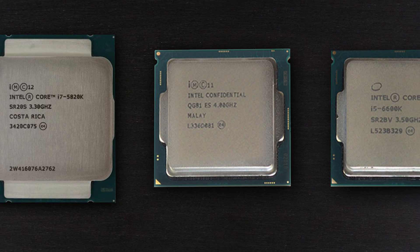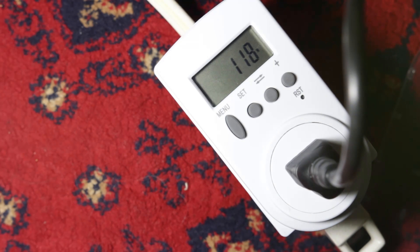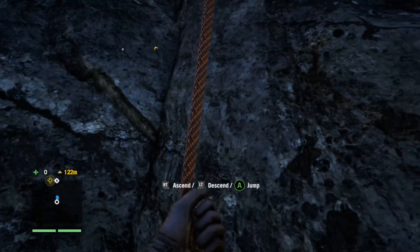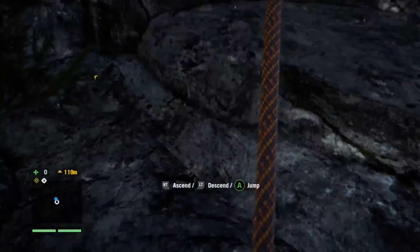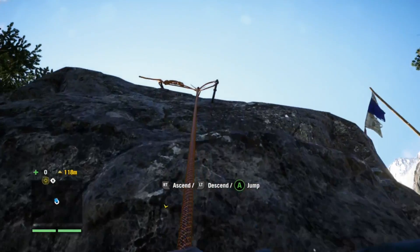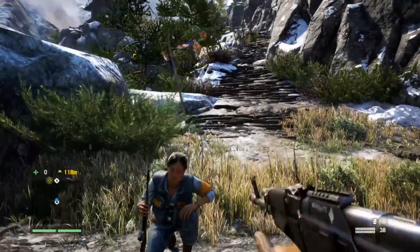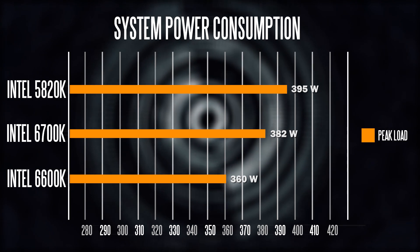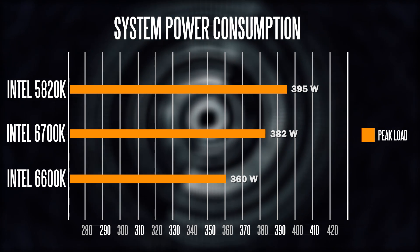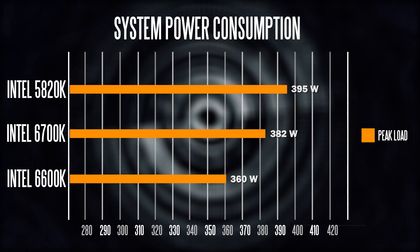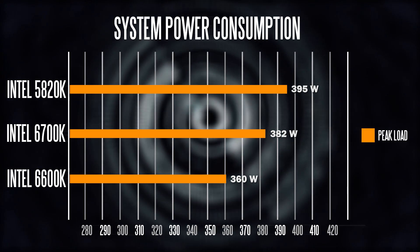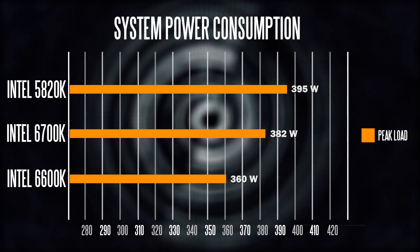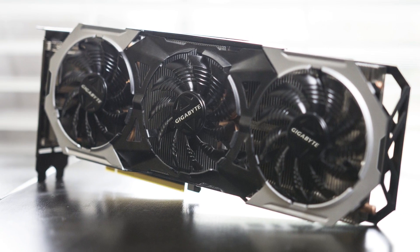The first thing we're going to look at is peak power consumption during a prolonged gaming session on each of these three rigs. We played Far Cry 4 for about half an hour and measured peak power consumption — this is the entire system drawing from the wall socket. You're looking at about 395 watts peak on the 5820K, about 382 watts on the 6700K, and about 360 watts on the 6600K. Not a massive difference across these CPUs; the biggest power draw is definitely going to be our graphics card, the GTX 980 Ti from Gigabyte.